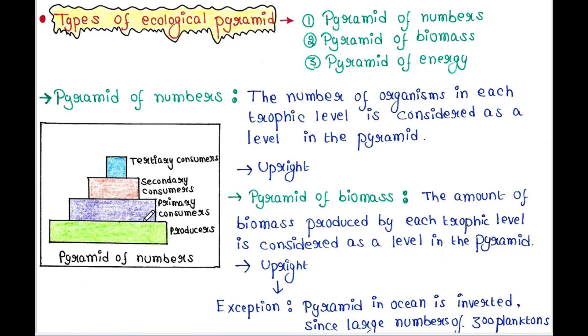This type of pyramid is always upright — that means the highest number in producers and lowest number in tertiary consumers.